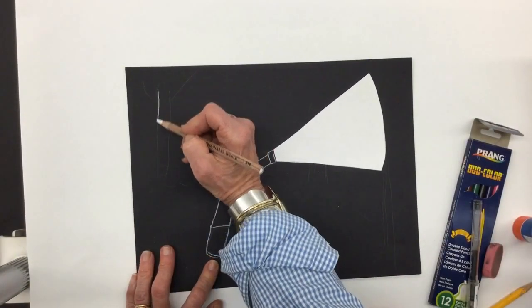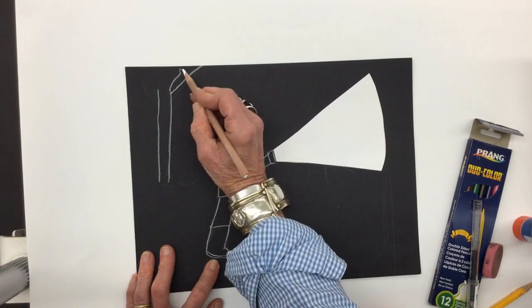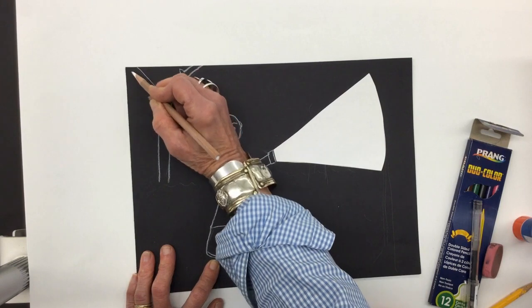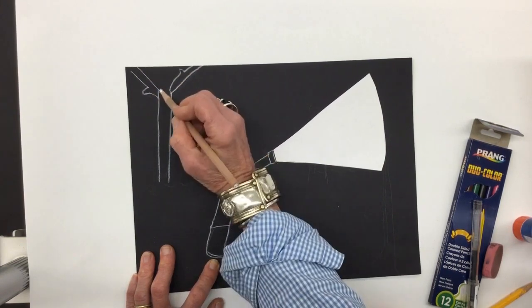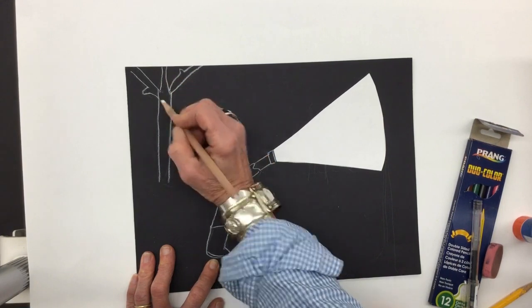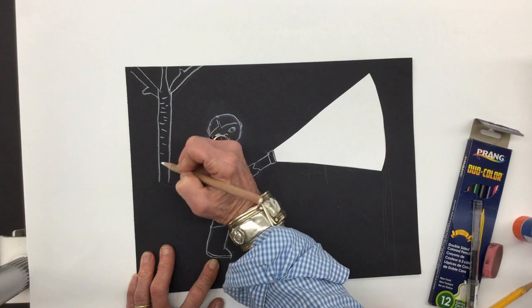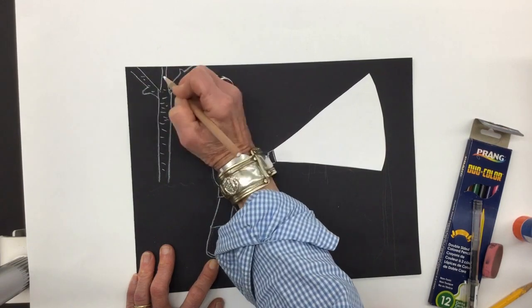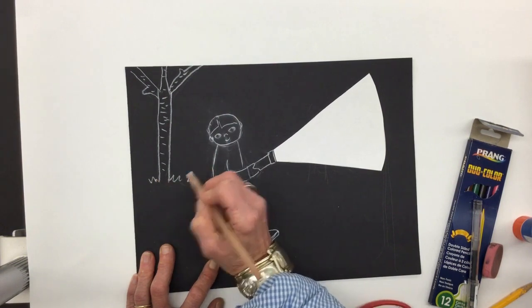So I'm going to start with a tree. I'll start right over here, straight up and down, branches off of branches. Maybe another one going this way. They're branching off here. I'm going to now add some texture by just repeating some lines. So what I'm going to do is show you. Don't forget the background.